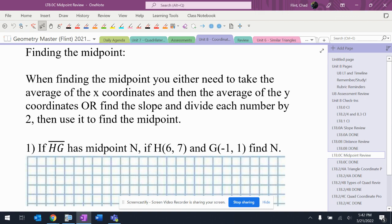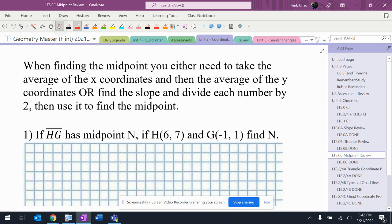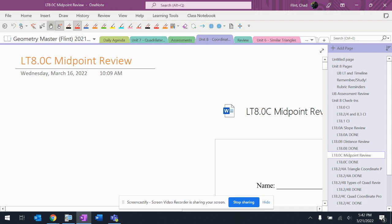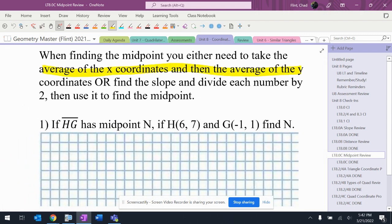If I have to find the midpoint, I'm averaging the x coordinates, averaging the y coordinates. We actually drew a picture on the graph when we did this and just chopped the slopes in half. Average the x, average the y, or find the slope and divide each number by two.